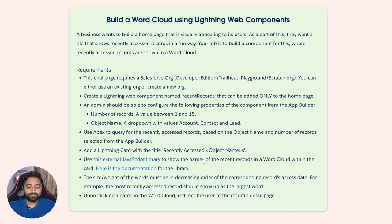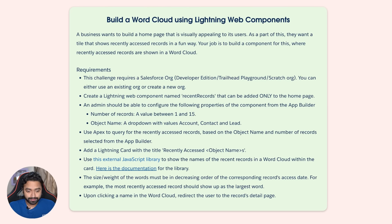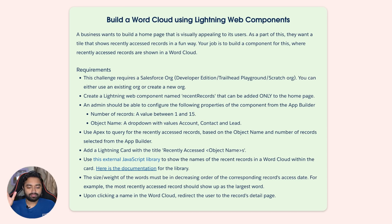There is an external JavaScript library to help show names in a word cloud, with documentation on a GitHub repo. The size and weight of words must be in decreasing order of the corresponding record's access date — the most recently accessed record should show as the largest word. Upon clicking a name in the word cloud, redirect the user to the record's detail page.